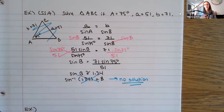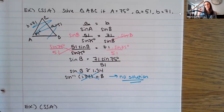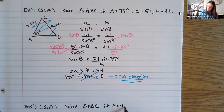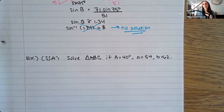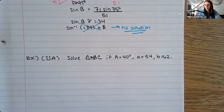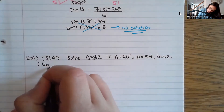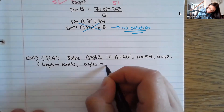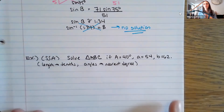Let's do one more — this time you'll see two solutions. Solve triangle ABC if A equals 40 degrees, a equals 54, and b equals 62. We'll round lengths to one decimal place and degrees to the nearest whole degree. I'll draw a picture again just to stay organized: A is 40 degrees, a is 54 across from it, and b is 62.